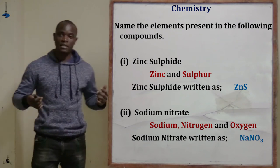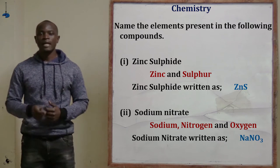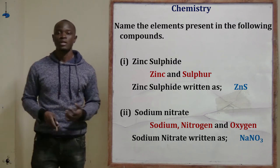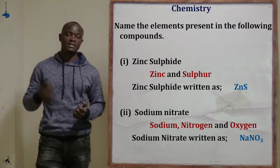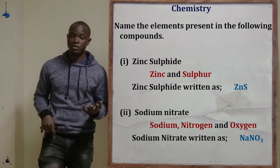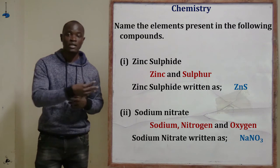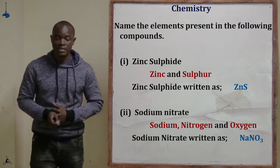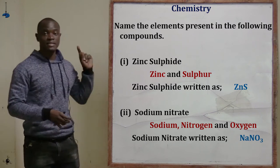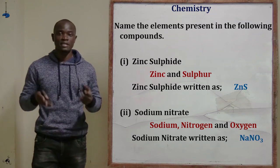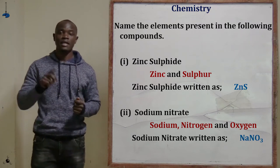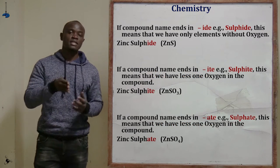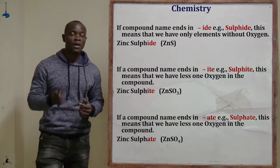Let's go to question number eight, which is asking to name the elements present in the following compounds. The first compound is zinc sulfide. When given a word formula like zinc sulfide, you should write it in chemical formula form. Zinc sulfide is written as ZnS. Since it ends in -ide, it means there is only one element — sulfur.